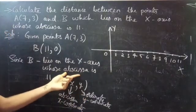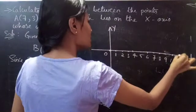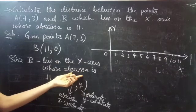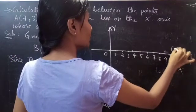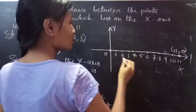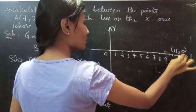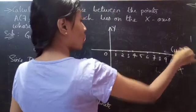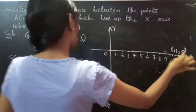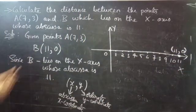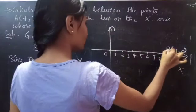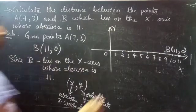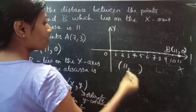Since you are having abscissa 11, the point lies on the x-axis, whose abscissa is 11, is nothing but the point (11, 0). Since they are given that the point lies on the x-axis at 11, which means that the ordered pair (11, 0) is the point B.